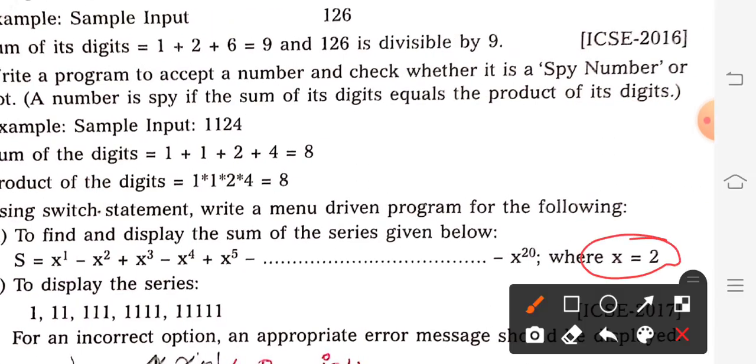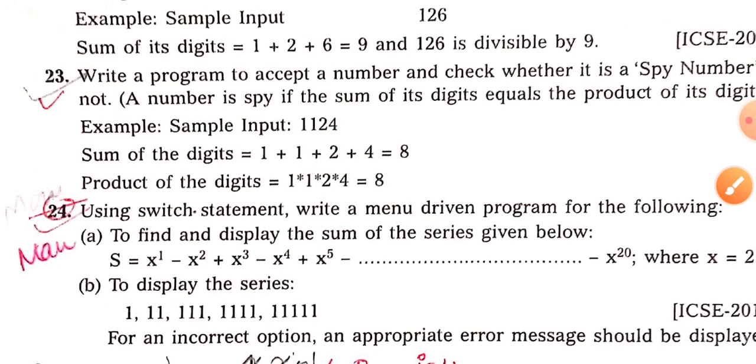Second thing, it says where x is 2. X ki value 2 hai. So when x value is given, there is no need to get the value from the user. No need to write int x = int.nextInt because the value of x is already given.